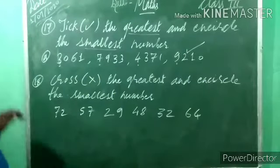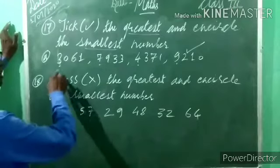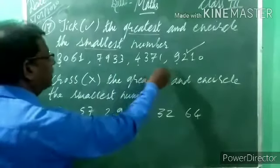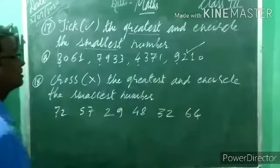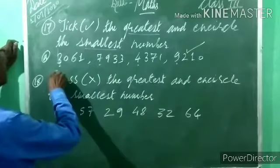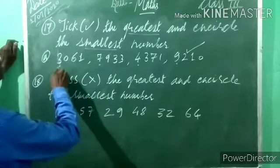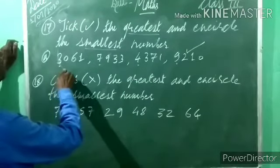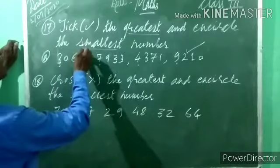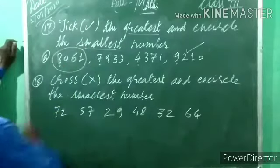Now, for the smallest number — select the smallest. Look: thousands digits are 3, 7, 4, 9. Which is the smallest? 3 is the smallest. So 3,061 is the smallest number. Circle this number.